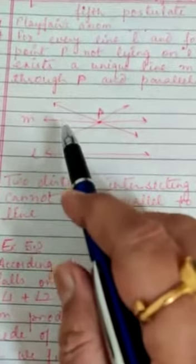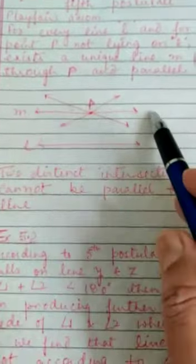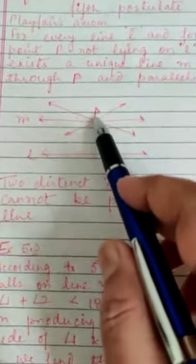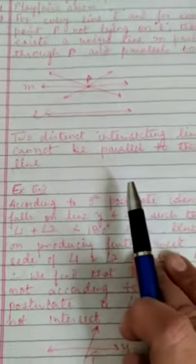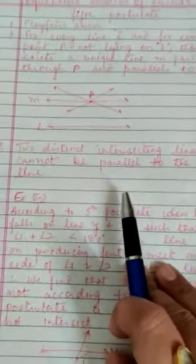Unique means one, one and only one. Line M, which passes through this point P and is parallel to line L. This is an equivalent version of Euclid's fifth postulate.